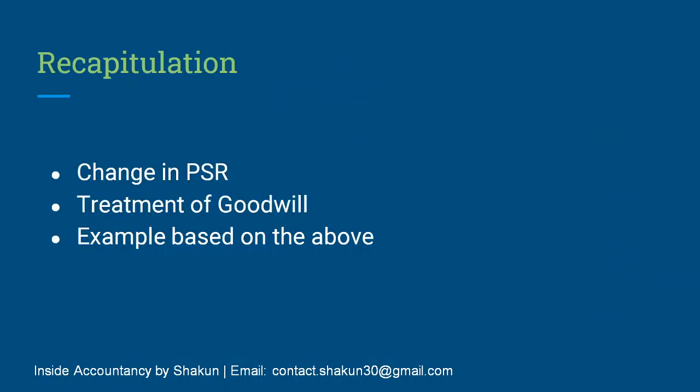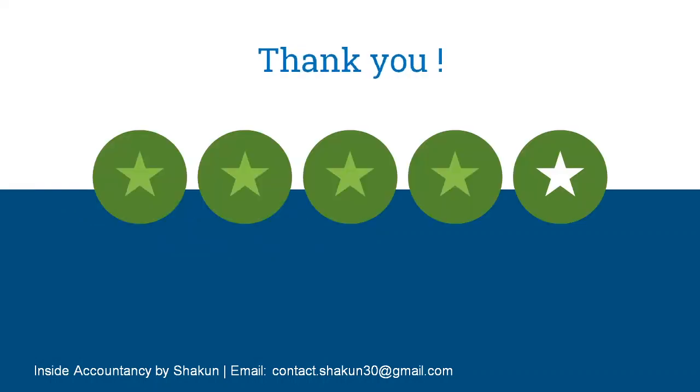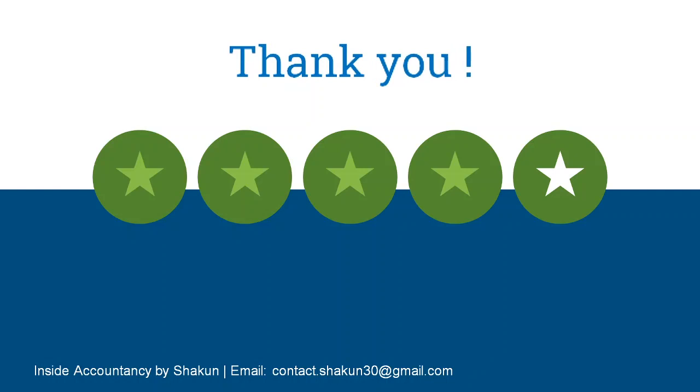In this video we have talked about the change in profit sharing ratio, the treatment of goodwill — both new goodwill and existing goodwill. The journal entry for goodwill is gaining partner's capital or current account DR to the sacrificing partner's capital or current account. For existing goodwill, all partners' capital or current account DR to goodwill. We also worked through an example based on the above. I hope the concept was clear. If you like the content, please like the video, subscribe to the channel, hit the bell button, and leave any queries in the comments.